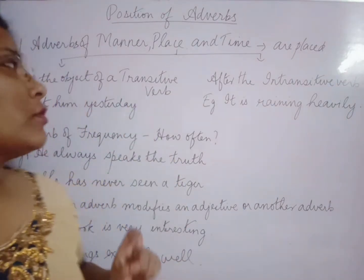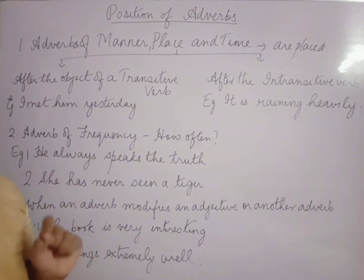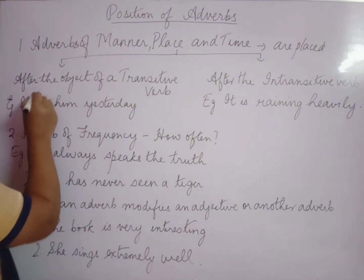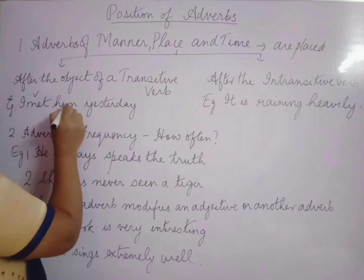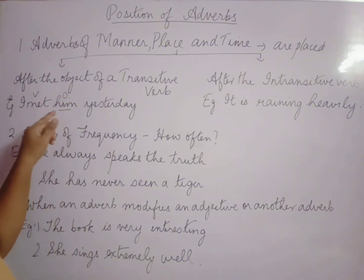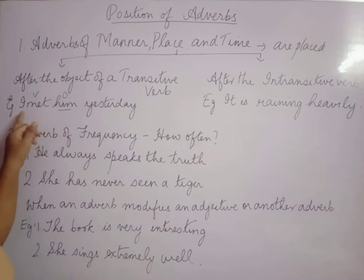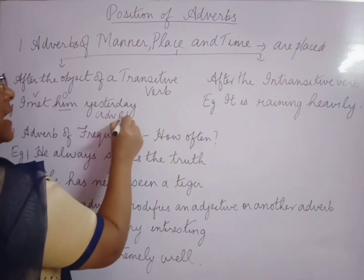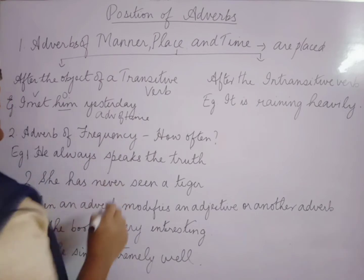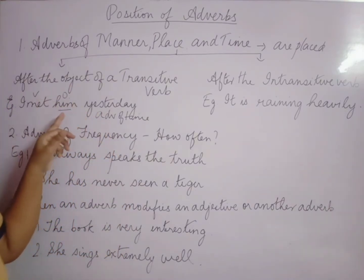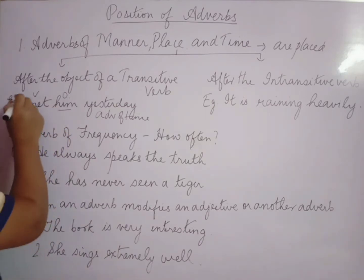Now, what are transitive verbs? Transitive verbs require an object to complete their meaning. For example: 'I met him yesterday.' Here, 'met' is the verb and 'him' is the object — him is required to complete the meaning. 'Yesterday' is the adverb of time, and it is placed after the object of the transitive verb.